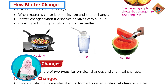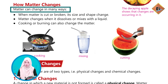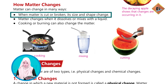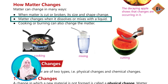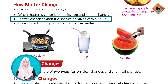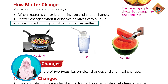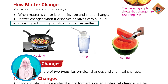اب how matter changes — matter کے پاس بہت سارے ways ہوتے ہیں change ہونے کے لیے۔ When matter is cut or broken, its size and shape change. Matter changes when it dissolves or mixes into a liquid۔ اسی کے ساتھ matter تب بھی change کرتا ہے جب ہم اسے کسی liquid میں mix کرتے ہیں۔ Cooking or burning can also change the matter — اگر ہم کسی matter کو پکاتے ہیں یا جلاتے ہیں تو بھی وہ خود کو change کرتا ہے۔